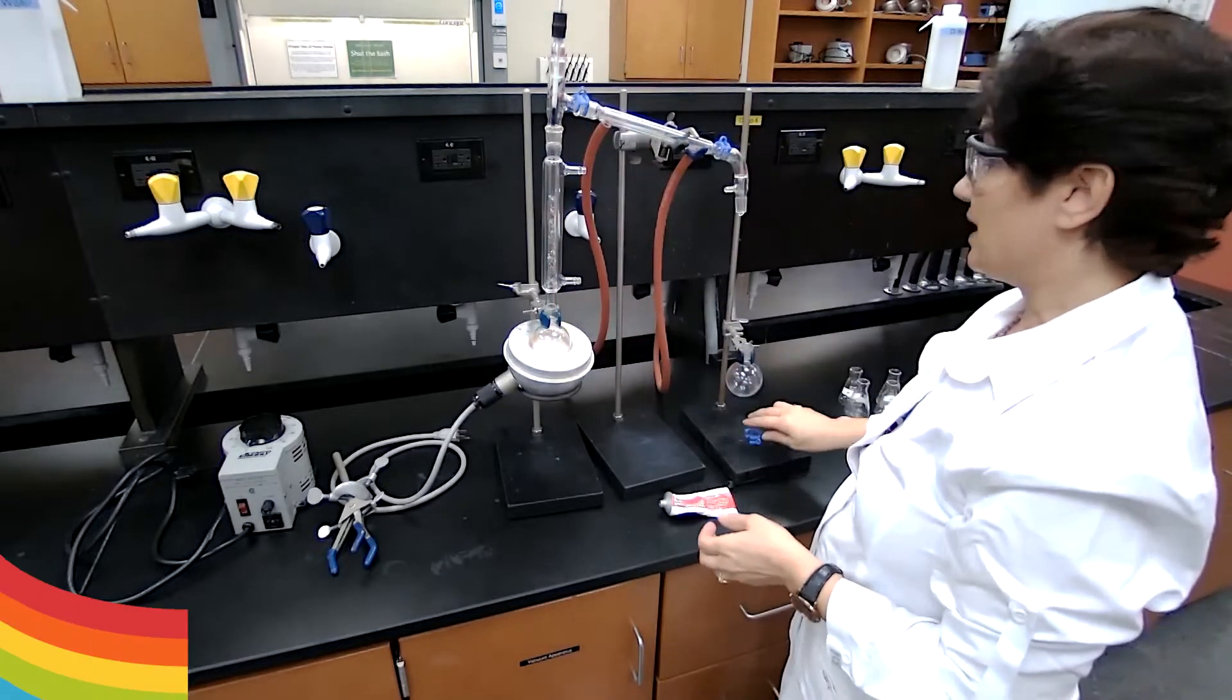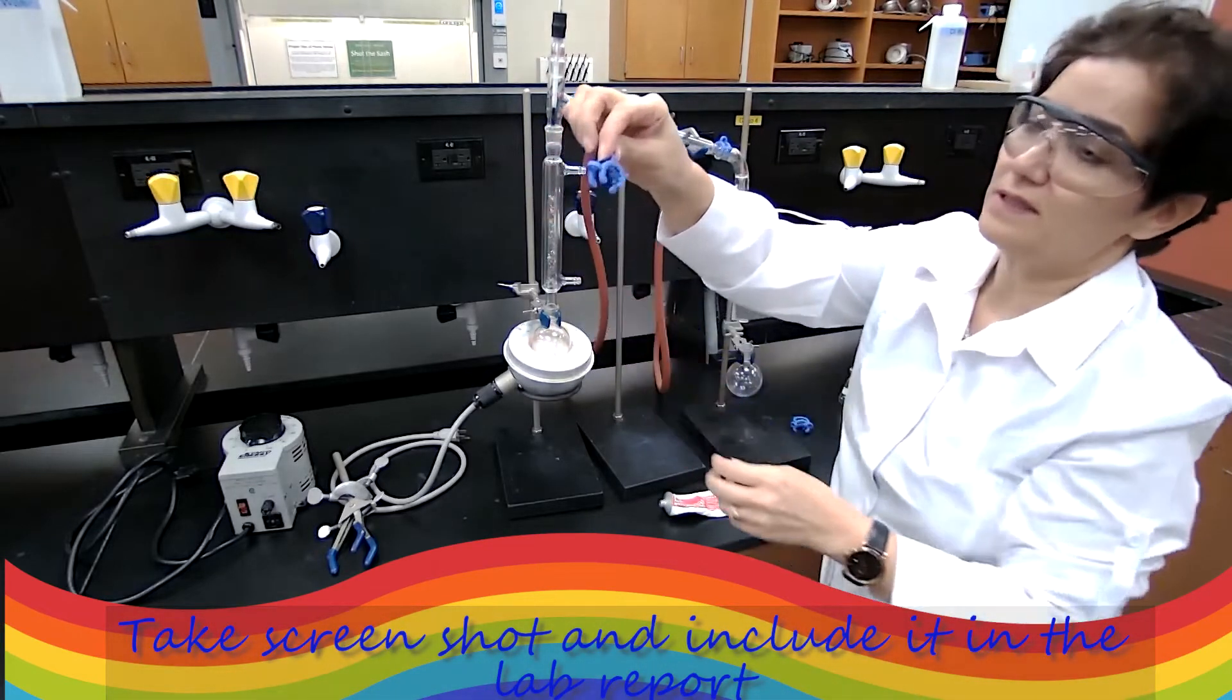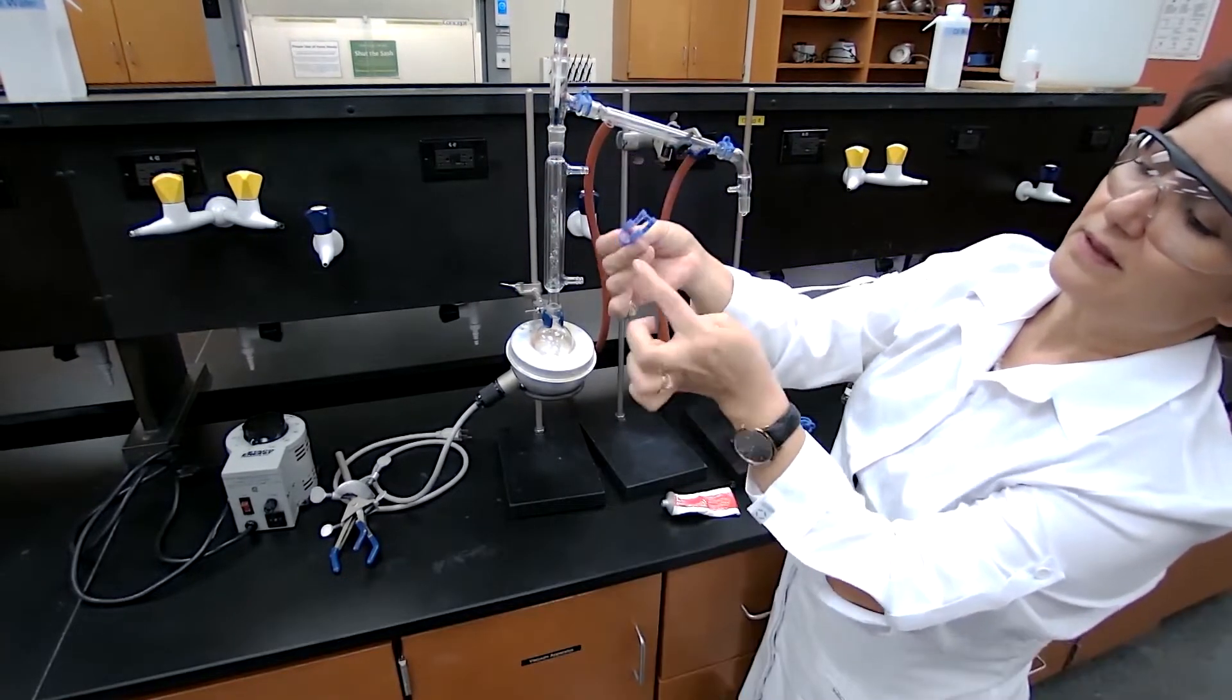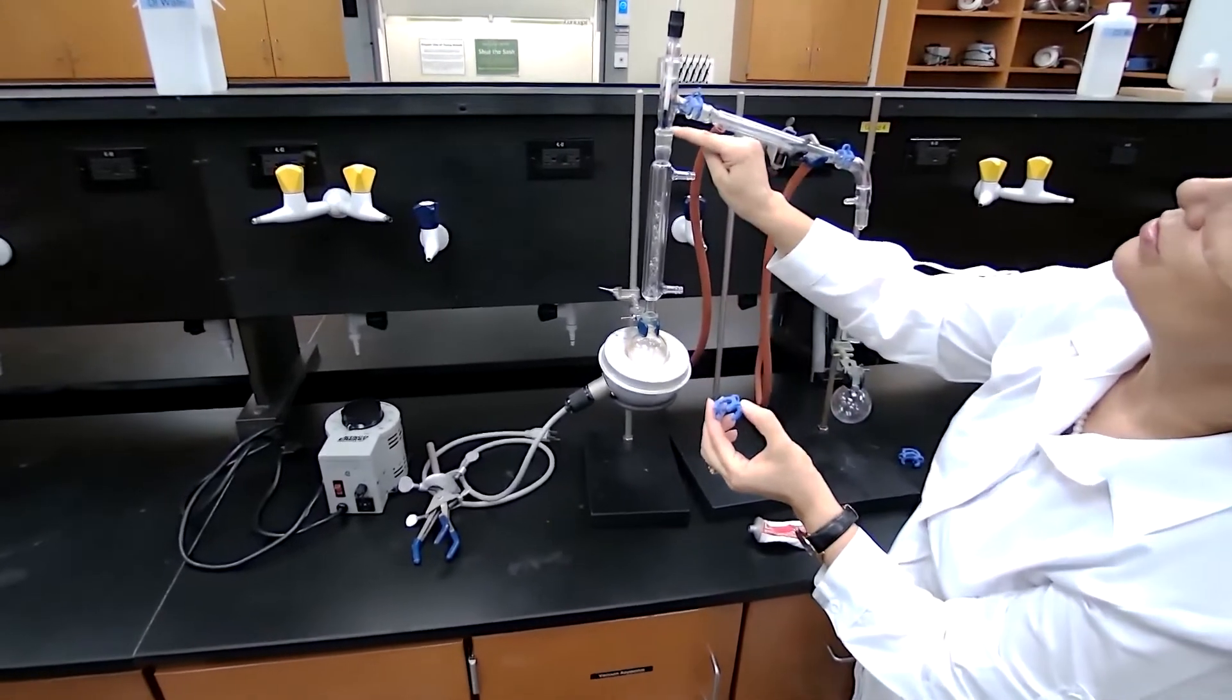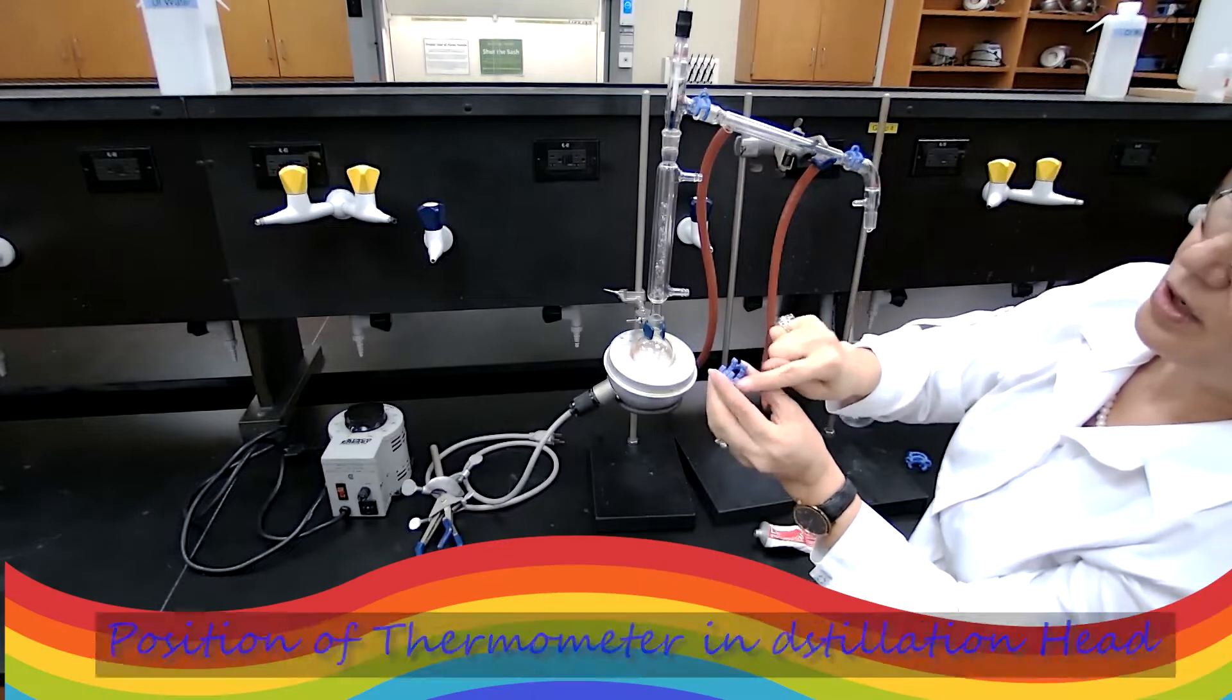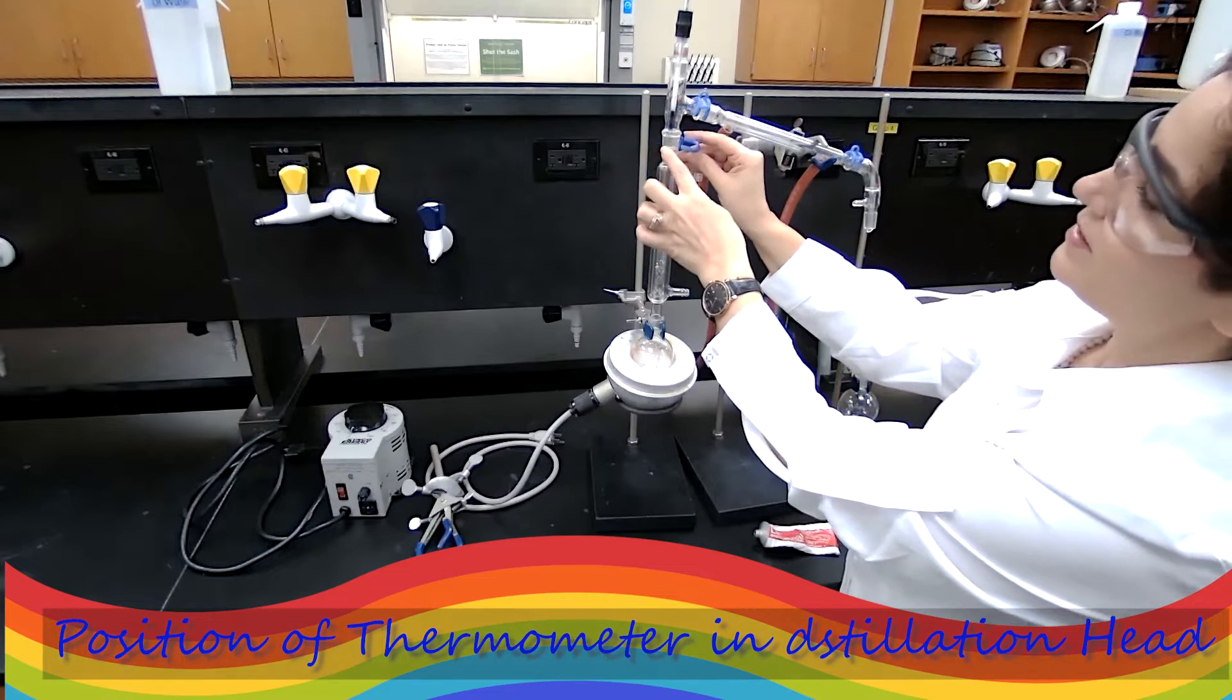Whenever you have two glass joints, you use the keck clamp which has a small ring and a large ring. The small ring should go to the thin side of the glass joint and the large one should go to the thicker part of the glass joint.